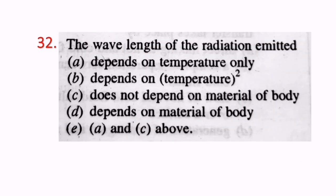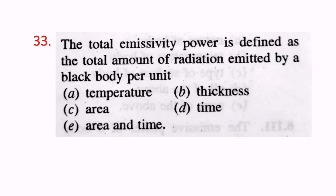Question 32: The wavelength of radiation emitted depends on temperature only and does not depend on the material of the body. Both A and C are correct. Question 33: The total emissivity power is defined as the total amount of radiation emitted by a black body per unit time.